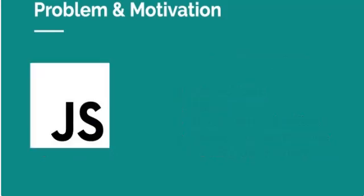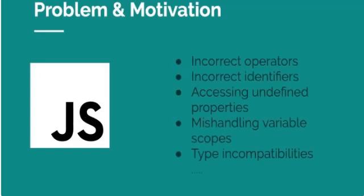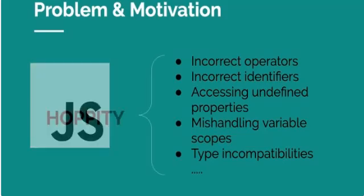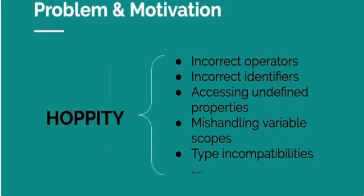To make matters worse, the popularity of dynamic scripting languages, such as JavaScript, provide a unique challenge. Bugs in JavaScript manifest in exceedingly diverse ways and cannot be captured by a single rule. Therefore, the primary goal of our approach is generality. An effective bug-finding tool for JavaScript must be operative against a broad spectrum of programming errors.